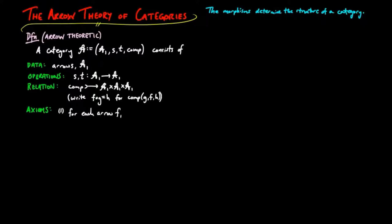For each arrow F, the target of the source of F is equal to the source of F, and the source of the target of F is equal to the target of F.